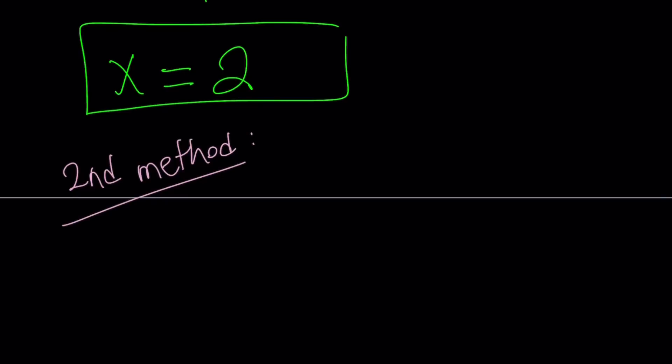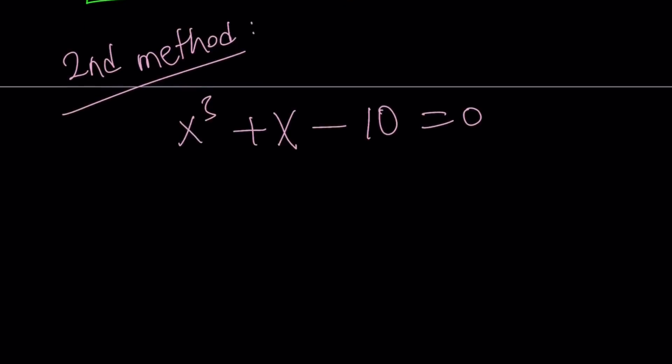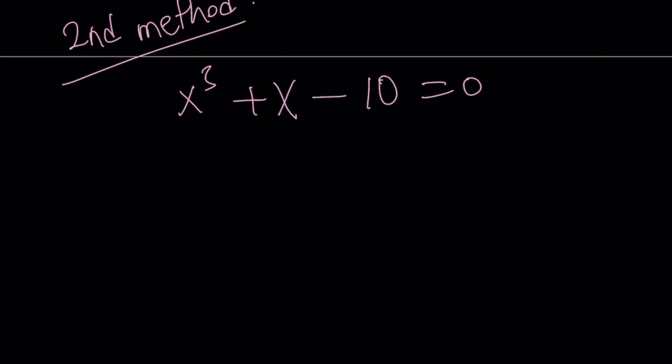Here's my second method. For the second method, let me write the equation one more time. I have x³ + x - 10 = 0.